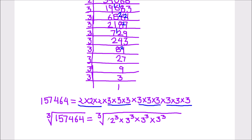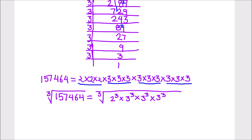So that's 2 cubed times 3 cubed times 3 cubed times 3 cubed. All these numbers are in cube and they are under the cube root sign. This cube and cube root will cancel out and all the numbers will come out of the cube root sign.